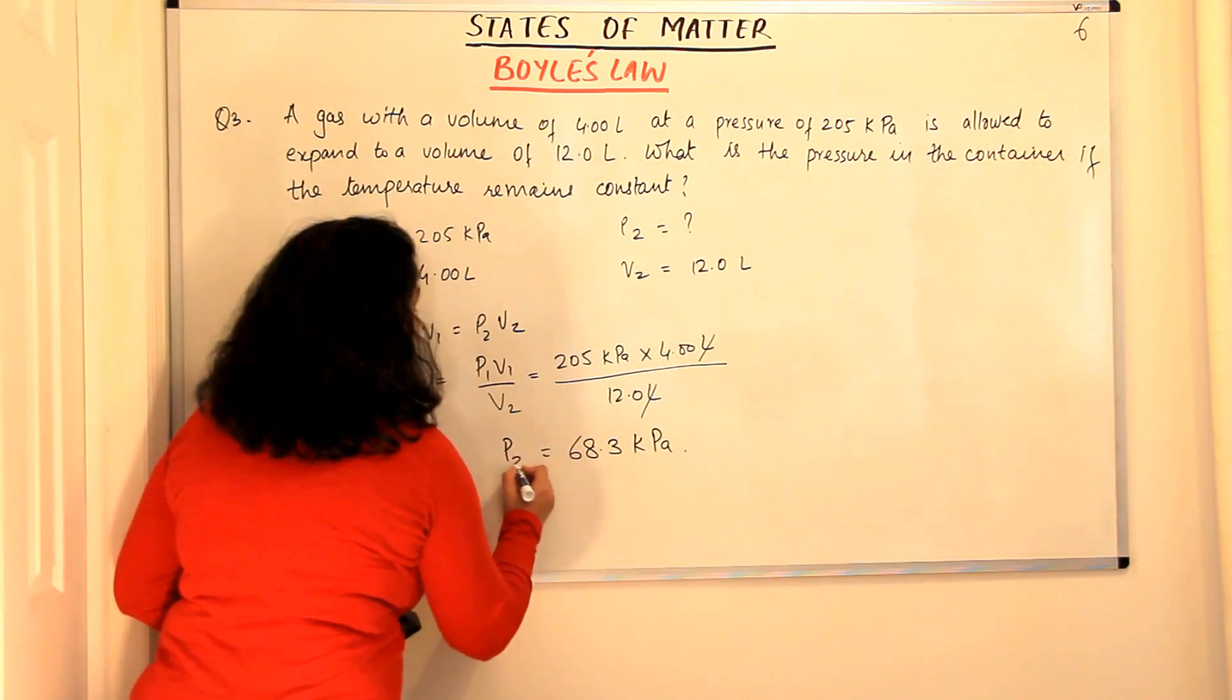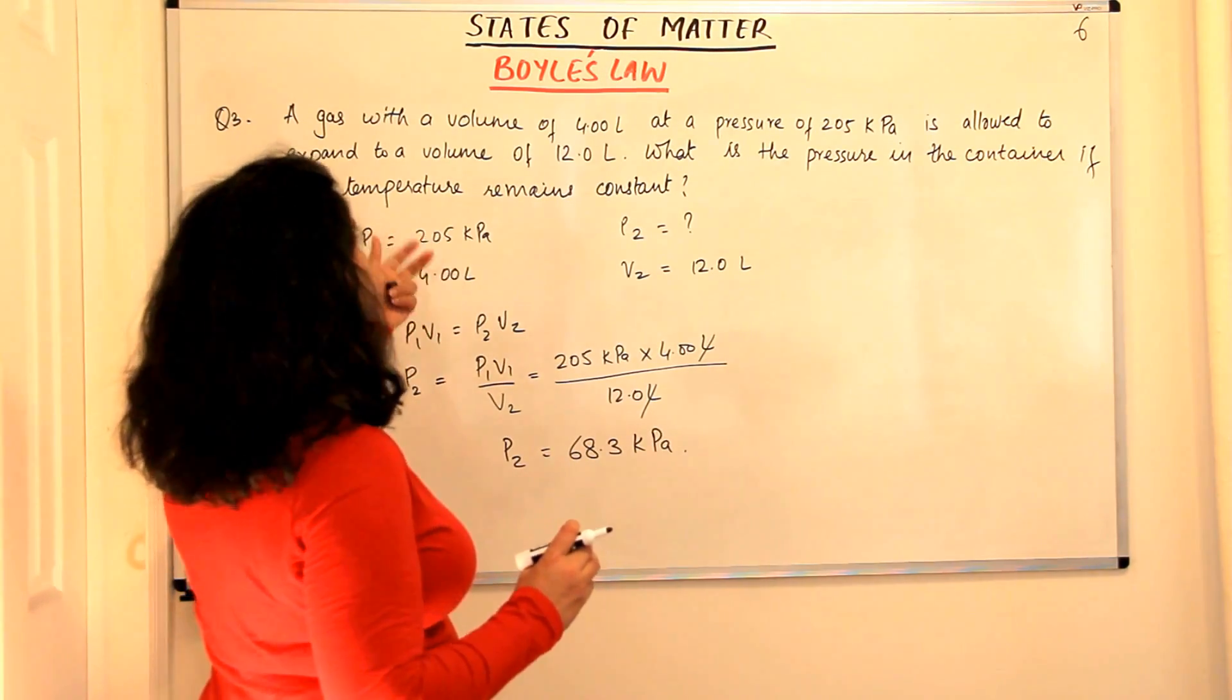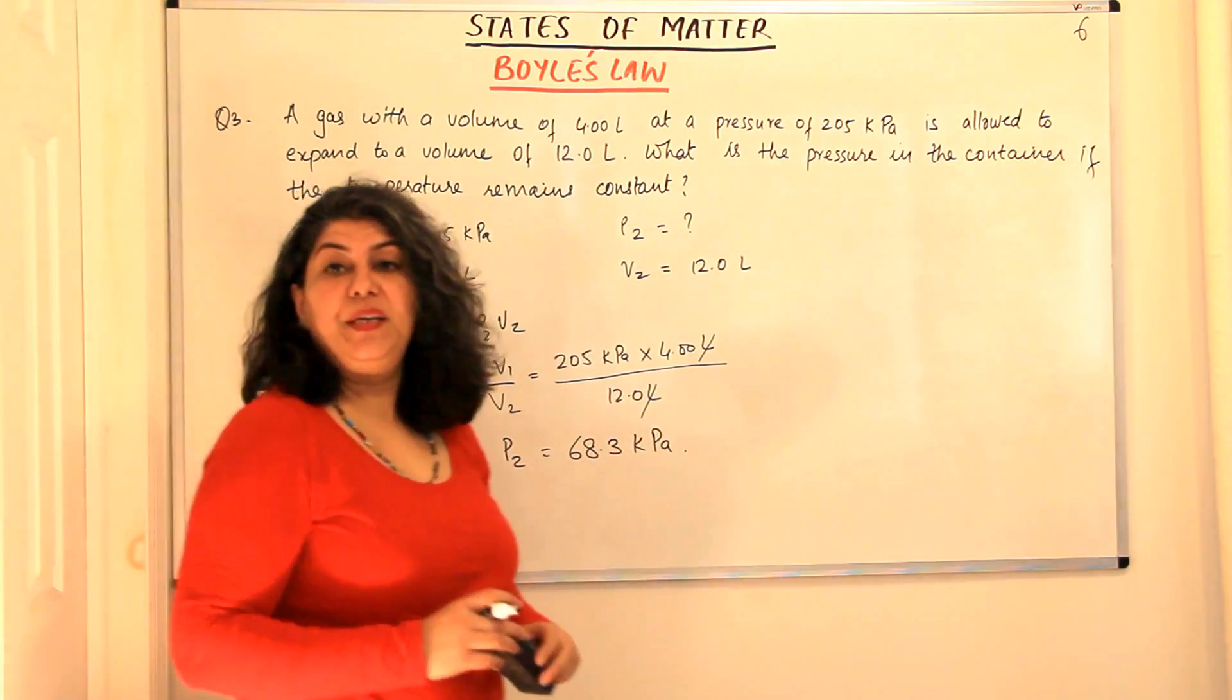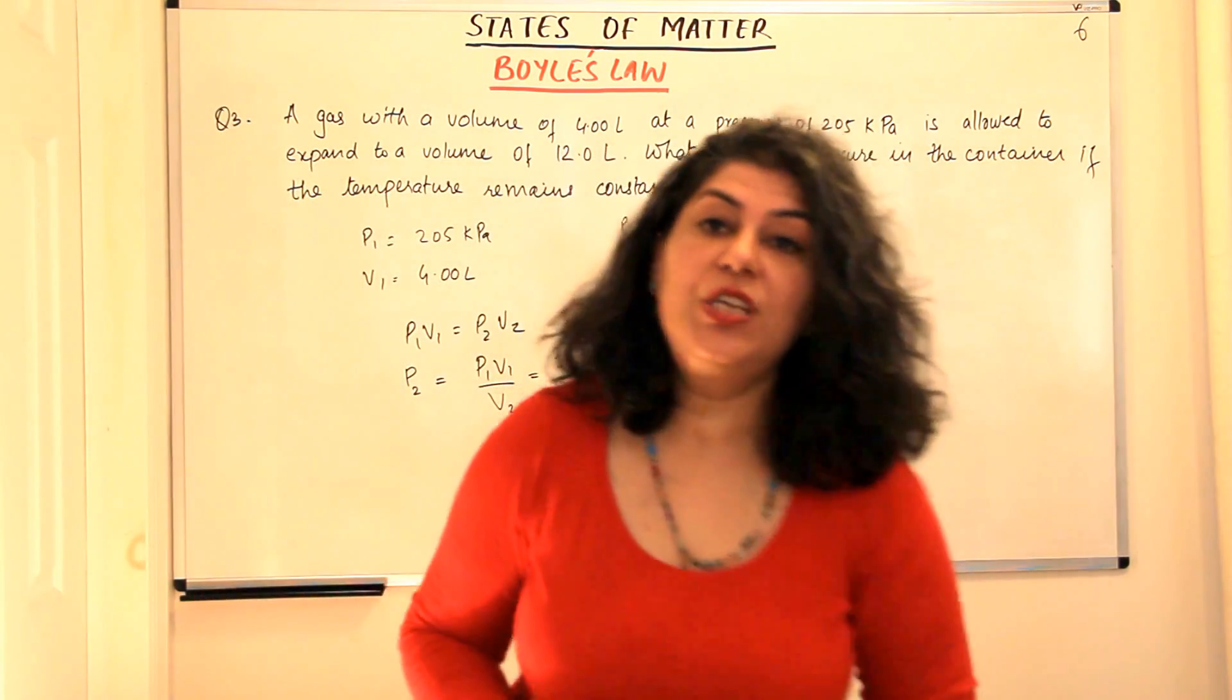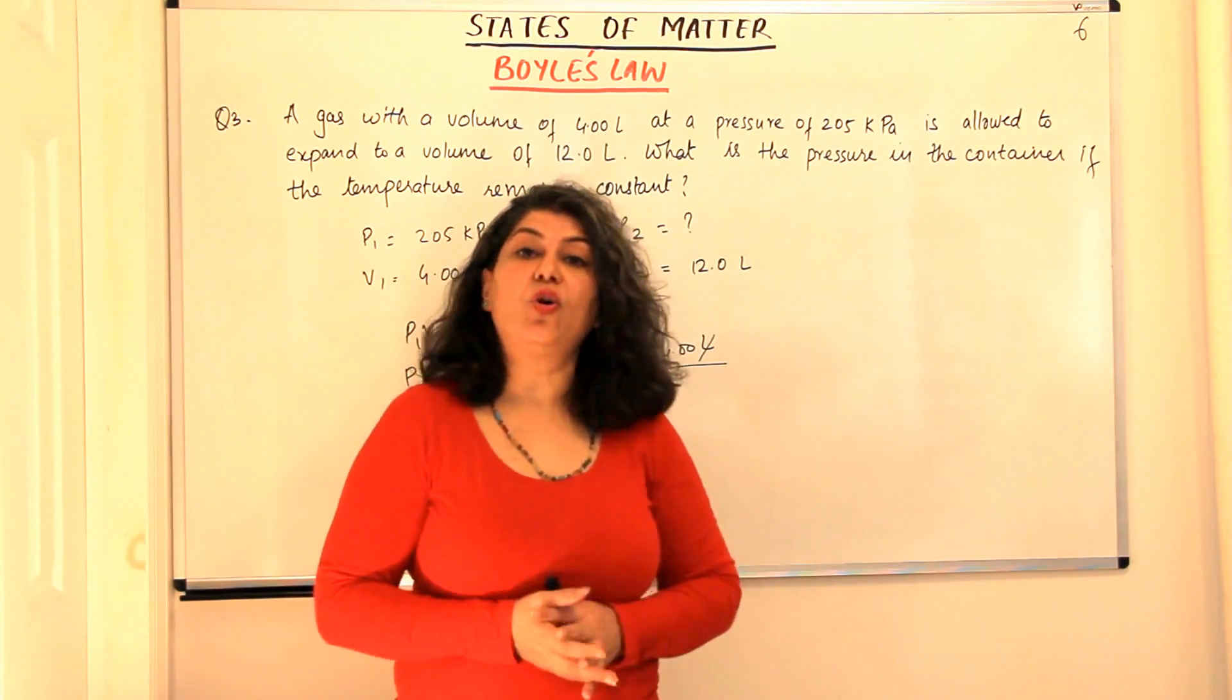P2 or we would say the pressure in the container, if the temperature remains constant, the pressure in the container would be 68.3 kilopascals. So, these were some numerical problems on Boyle's Law. I hope they helped you to understand the law better.